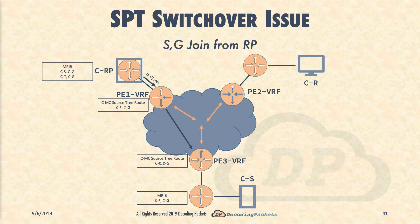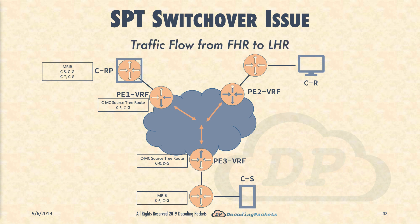Now the CRP is aware of at least one sender CS for this group CG. As the rendezvous point, it must facilitate delivery of packets for CS,CG over the shared tree. To receive the packets first, it creates an S,G join towards the RPF neighbor for the CS. This S,G join ends up on PE1, which creates an MVPN source tree join route and advertises it to PE3. PE3 converts it back into a PIM join and sends that to the FHR.